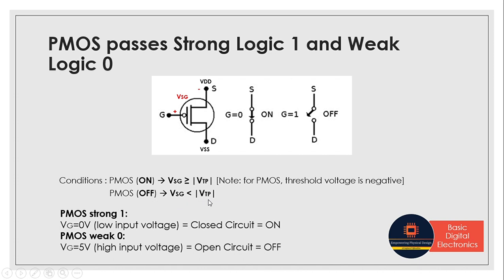If VHSG is less than the modulus of VTP, then PMOS will be turned off. PMOS will pass strong logic 1 only when there is a low input voltage applied — that is, the gate voltage is very low — which forms a closed circuit and turns PMOS on. But if we apply a high gate voltage, it creates an open circuit and PMOS is off. That is when PMOS passes weak logic 0. Let's analyze these conditions with an example.